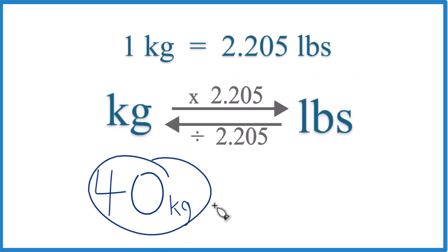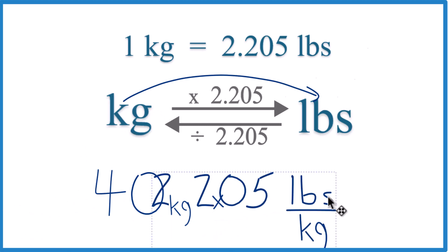In this case, we have 40 kilograms and we're trying to figure out pounds. So kilograms to pounds, and we're just going to multiply by that 2.205 number there.